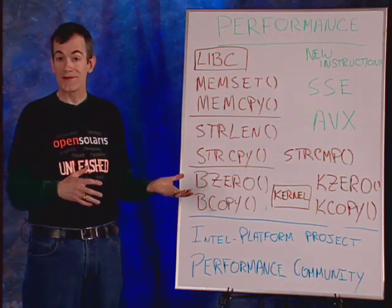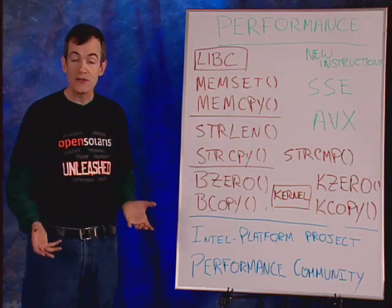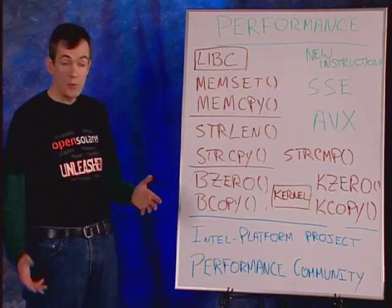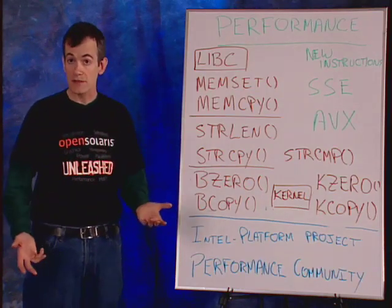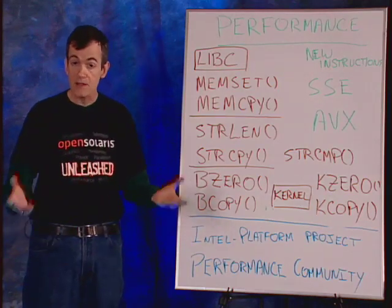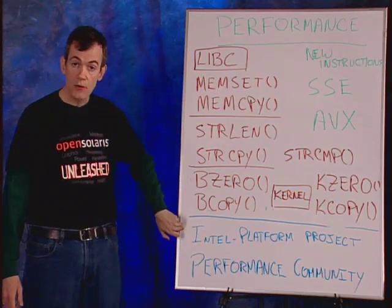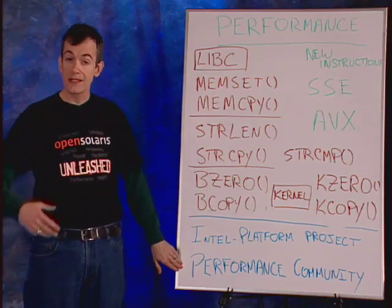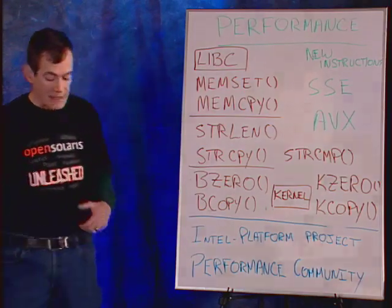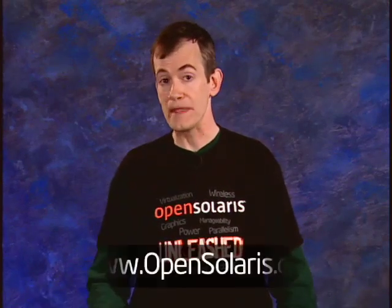Obviously we can't do all of this ourselves — we'd really like your help and involvement. We need you to go to opensolaris.org and join the community. There are two particular areas to participate: use OpenSolaris and try it out with your applications to see what difference these new versions make; and get involved with the Intel platform project and the performance community. Because it's open source, you can download the source code for memset and memcopy, see what we're doing with new instructions, and give us feedback on how we can improve it. We'd like to participate with you to make Intel the best platform to run OpenSolaris and Solaris on.